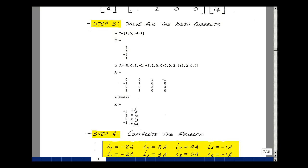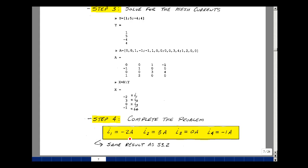Lastly, step four is to complete the problem. And that's that I1 is equal to minus 2 amps, I2 is equal to 3 amps, I3 is equal to 0, and I4 is equal to minus 1.